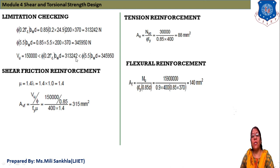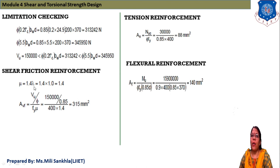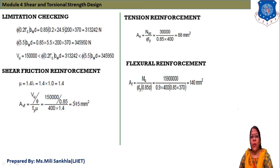Now check shear friction reinforcement. Mu = 1.4 × lambda = 1.4 × 1 = 1.4, based on the given concrete grade. AVF = VU / (phi × Fy × mu) = 150,000 / (0.85 × 400 × 1.4) = 315 mm².